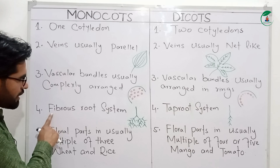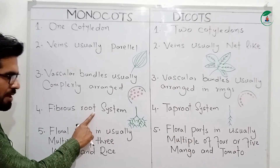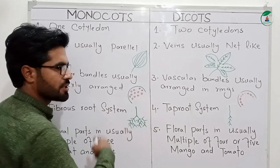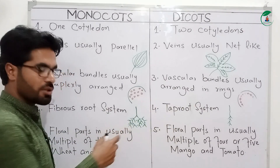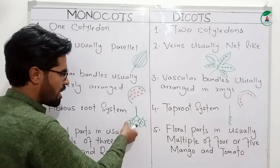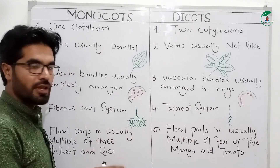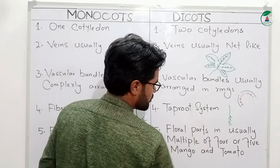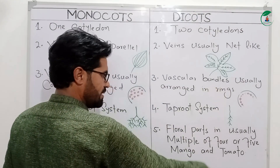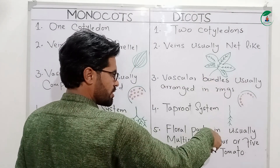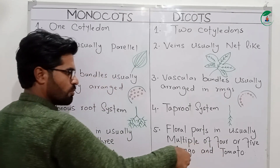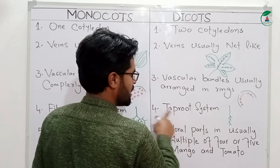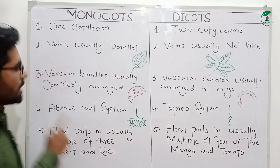The roots will begin in the zone. The root system will be built. The type of root system is very narrow, referring to the fibrous root system.